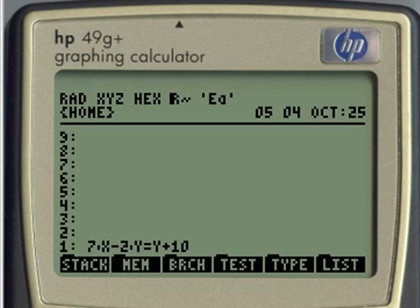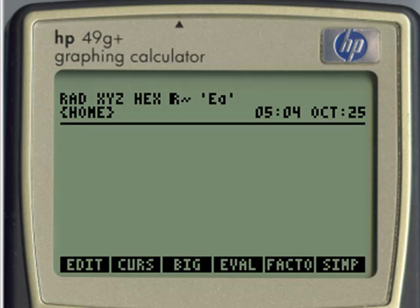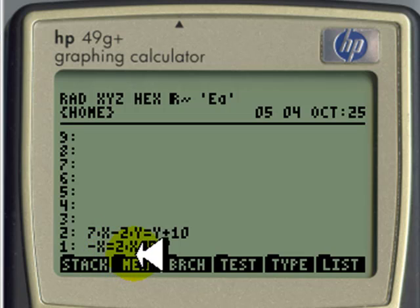Let's go back to the equation writer to enter the second of the equations. Negative x, highlight, equal to 2 times x minus 5 times y. That's the second equation. Negative x equals 2x minus 5y.